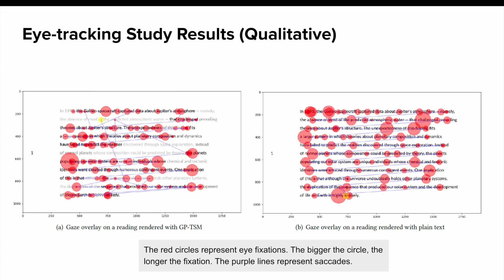There also tends to be more frequent and larger saccades, suggesting a non-linear reading pattern. The typical reading interface, by contrast, shows a more uniform distribution of fixations and little saccades across lines.